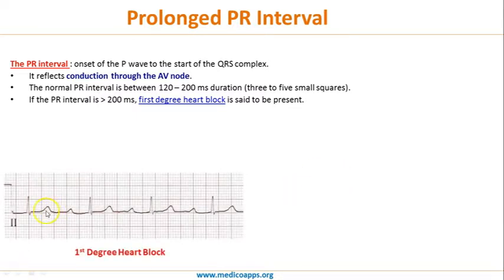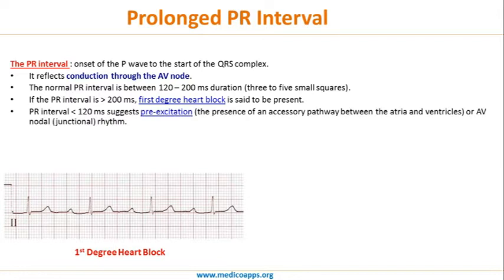As a reminder, we have already seen first-degree, second-degree, and complete heart blocks. Here we can see almost eight or nine small squares, indicating an increased PR interval. If the PR interval is less than 120 milliseconds, it suggests pre-excitation or the presence of an accessory pathway between the atria and the ventricle, through which the impulse is conducted at a faster rate, or it may indicate AV junctional rhythm — where the impulse originates from the AV node.